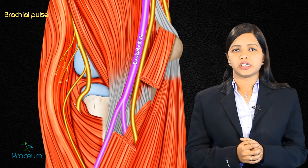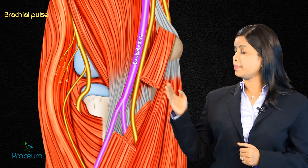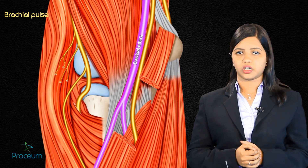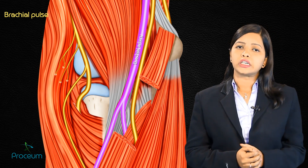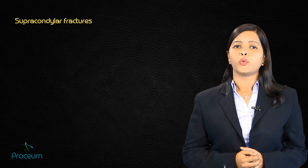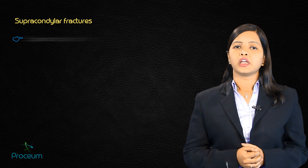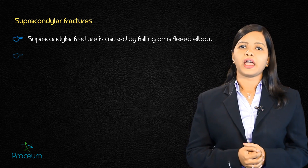The second important point is the brachial pulse, which can be felt by palpating immediately medial to the biceps tendon in the fossa. The third important point is supracondylar fractures — this is caused when we fall on a flexed elbow.